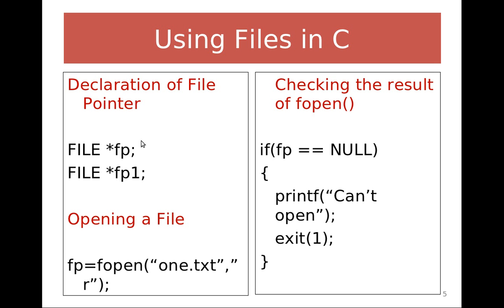As I've said, you have to create file pointers. How many files you want to operate simultaneously — that many pointers you have to create. If you want to read from two files simultaneously, you need two file pointers. If you read from the first file, close it, and then read from the second file sequentially, you can use a single pointer. If you want to read from one file and write to another simultaneously, you require two file pointers. The number of file pointers depends on how many file operations you want to do simultaneously.